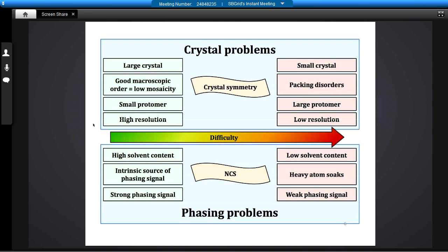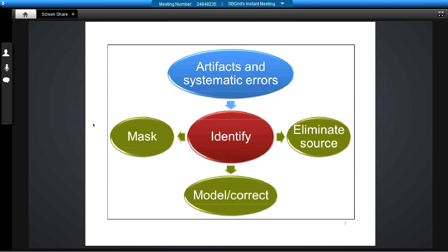All the problems I divide for two groups. You have difficulty. And difficulty pretty much is related either to the crystal properties or to the properties of the problem, phasing problem. Or sometimes you have, unfortunately, the mixture of both. It's better to have large crystal than small crystal. High solvent instead of low solvent because it helps you in phasing. NCS and crystal symmetry can help you or hurt you depending on the situation.